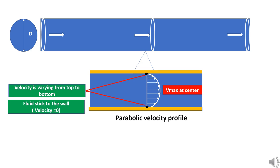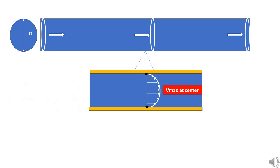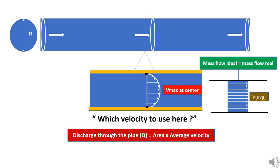Now, the question arises, which velocity to use for calculating discharge. The velocity is no more uniform. We create an imaginary uniform velocity called average velocity. This will be used for the calculation of discharge through the pipe.